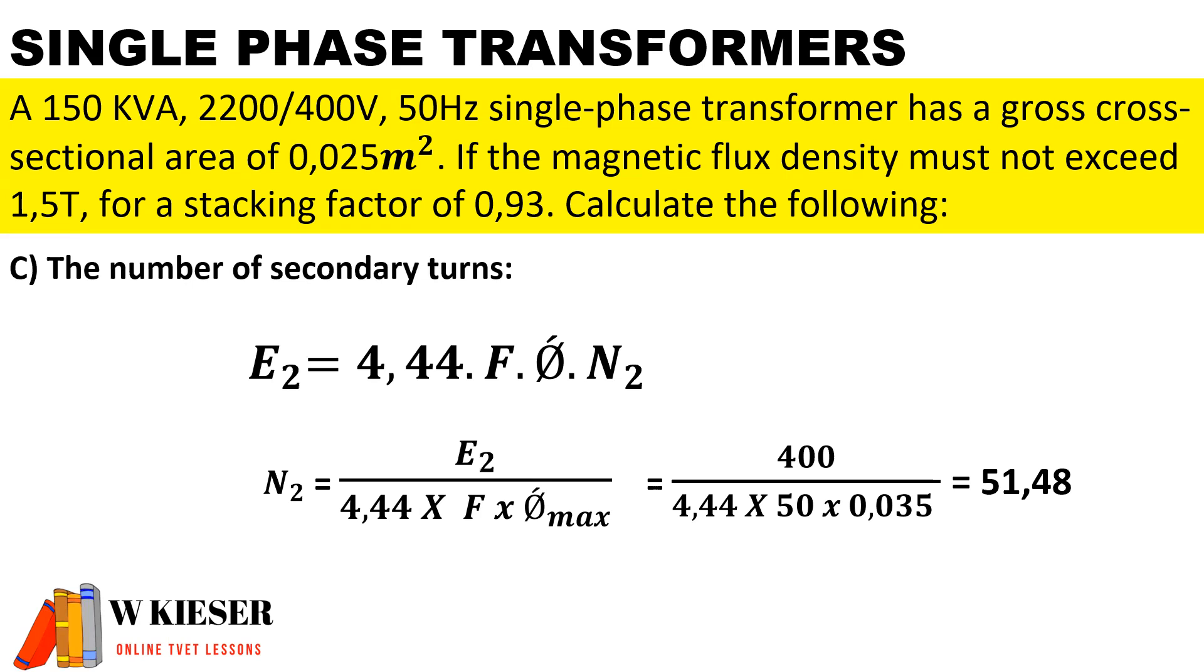To calculate the number of secondary turns, we'll use the EMF on the secondary side of 400 volts divided by 4.44 and divided by the frequency of 50 hertz and the maximum flux of 0.035. If you round it off, the number of turns on the secondary side will be 52.